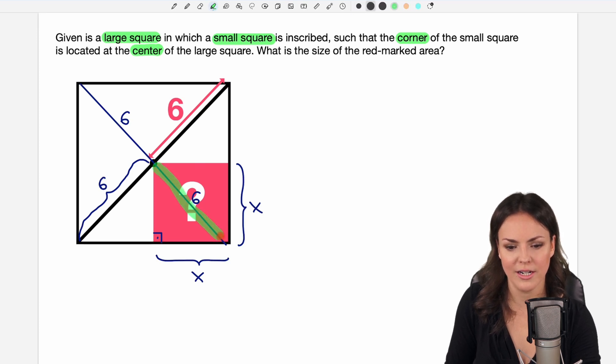This side here is our hypotenuse. Okay then we also need the length of this side here but it's the same as this one so it is of length x.